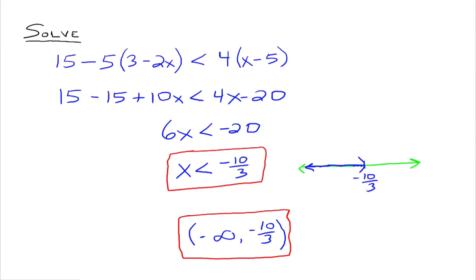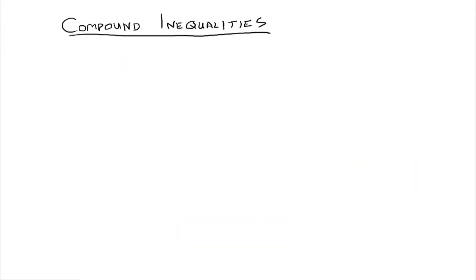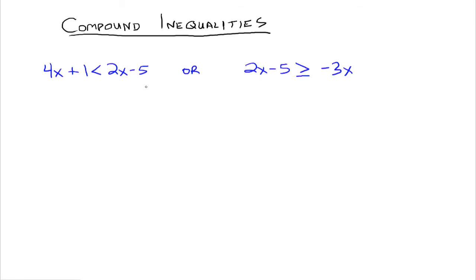Now let's talk about compound inequalities. Compound inequalities means we're dealing with more than one linear inequality at one time. For example, we're looking for all the real numbers that are solutions to this inequality on the left or this inequality on the right. The word 'or' is used because we're looking for all numbers that satisfy either one.